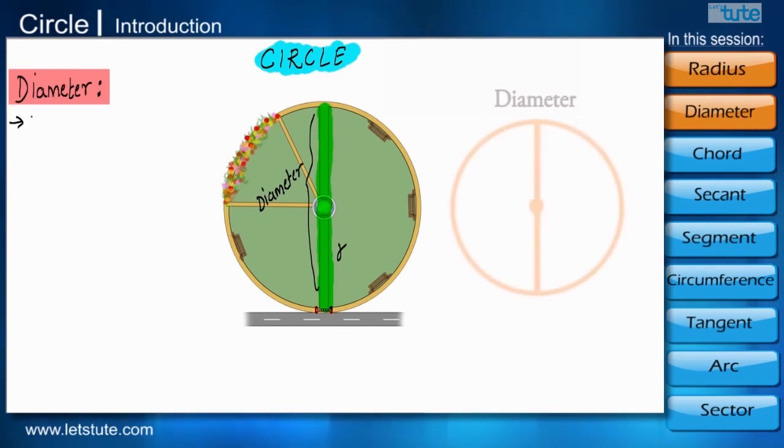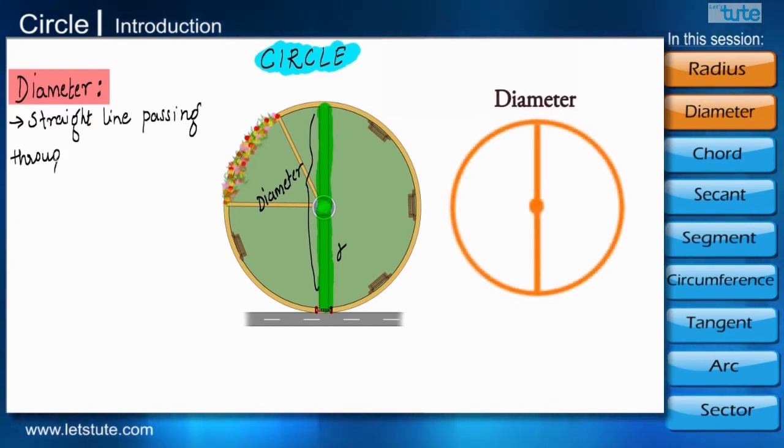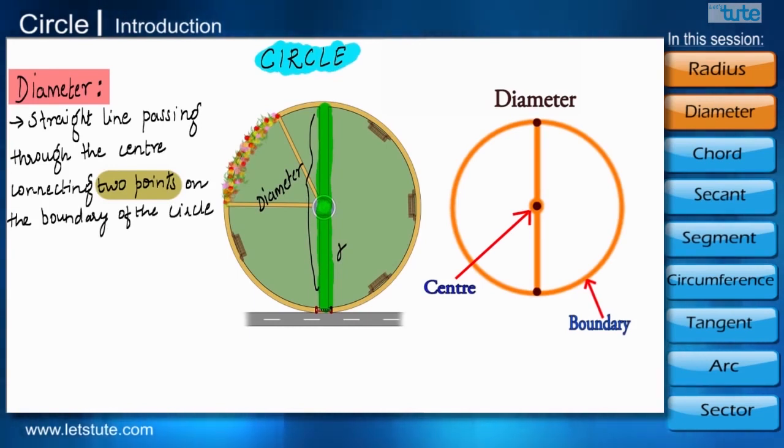The diameter of the circle is a straight line passing through the center connecting two points on the boundary of the circle.